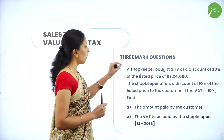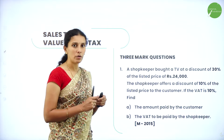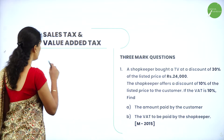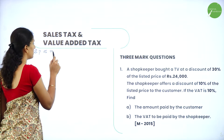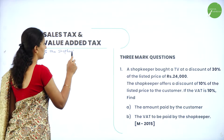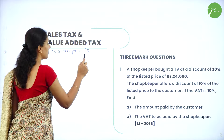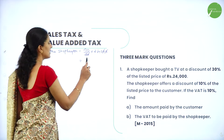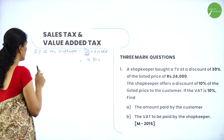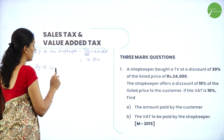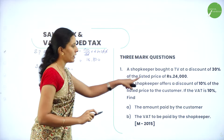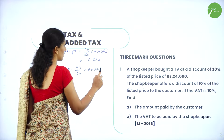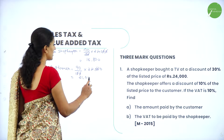First, let us find how much he bought the TV for. A 30 percent discount means he paid 70 percent of 24,000. So the selling price of the shopkeeper is 70 percent of 24,000, which equals rupees 16,800. The selling price to the customer is 90 percent of 24,000, that is rupees 21,600, since there is a 10 percent discount.